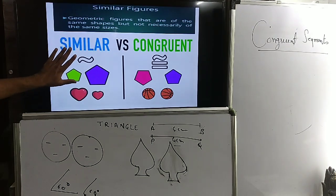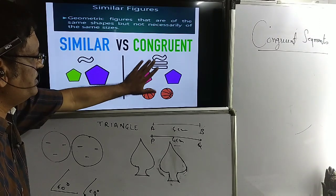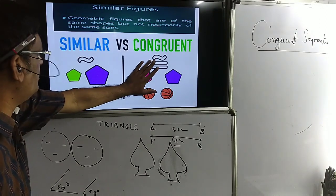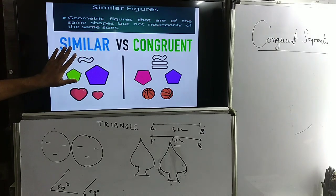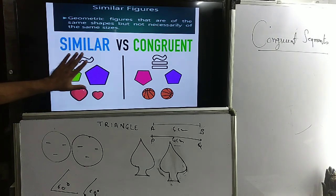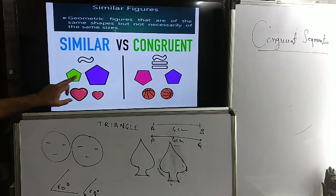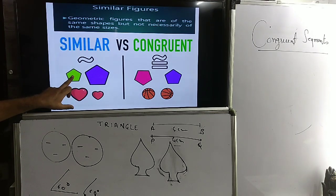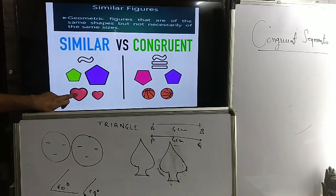Now the difference between similarity and congruence: congruence means exactly the same copy — a photocopy. Similar means shape is the same but sizes may be different. This is a smaller copy and this is a larger copy; this is a reduced copy.